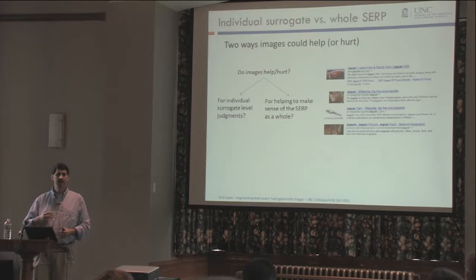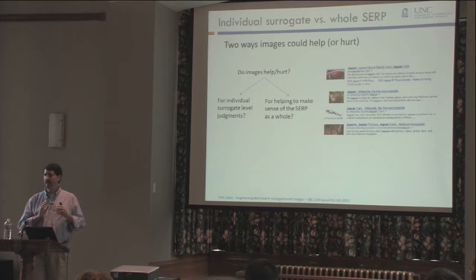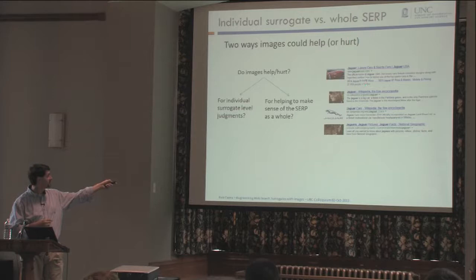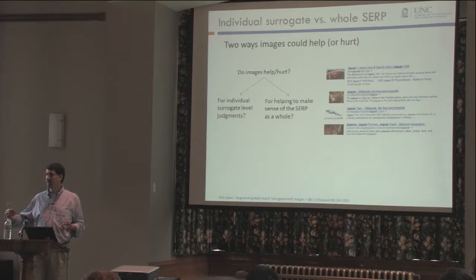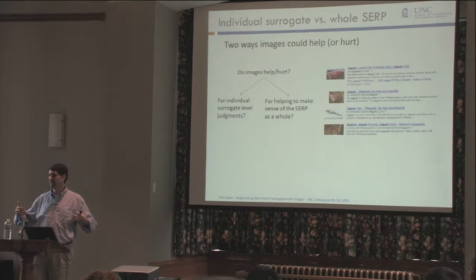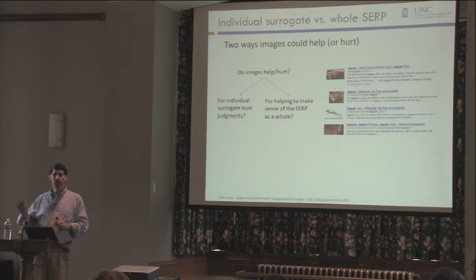We felt there were two ways images might help or hurt you. One is when making an individual decision about a particular result — does this image help me figure out that result at the individual surrogate level? The other is when processing the entire set of results: if I see a bunch of pictures of cars and I'm looking for the animal, I might do a triage and say I'm in the wrong place, maybe I need to reformulate my query. We wanted to look at both.